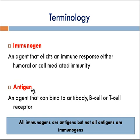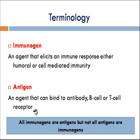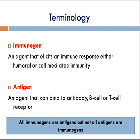The next term which is very important is the antigen. Again it is a combination of two words: anti, which is for antibody, and gen, which is for generating. Any component that generates the antibody is known as an antigen. Another definition is that any agent that can bind to antibody, B cell, or T cell receptors is known as an antigen. An important thing to keep in mind: all immunogens are antigens, but not all antigens are immunogens. Immunogens generate the immune response, whereas antigens bind to antibodies, B cells, or T cell receptors.